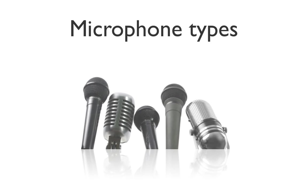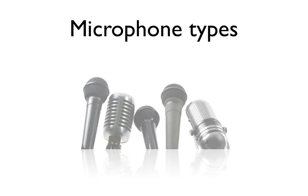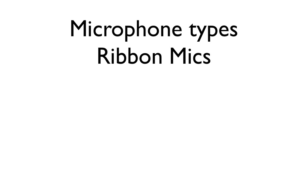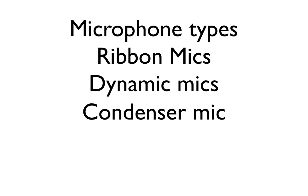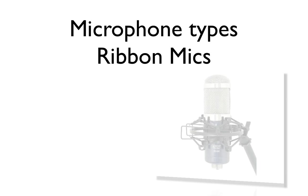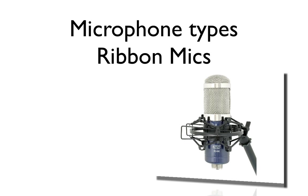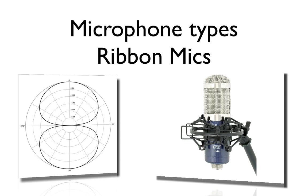Let's go ahead and cover microphone types. There are three most commonly used microphone types out there. I'm going to cover ribbon mics, dynamic mics, and condenser mics. So let's go ahead and talk about ribbon mics. Ribbon mics are typically bi-directional, which we'll get into in a little bit, but essentially what this means is that they pick up sound equally well on either side of the microphone.